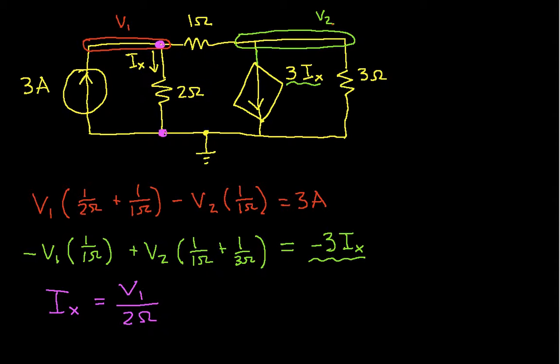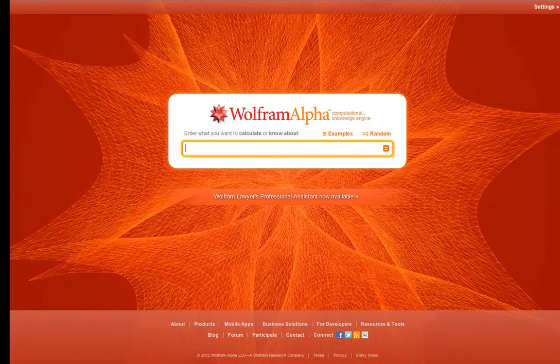So we actually have now three equations and three unknowns. The unknowns, again, are our two node voltages and IX. So we can just plug this into an equation solver, and that will give us the answer we're after. So if I go to Wolfram Alpha...